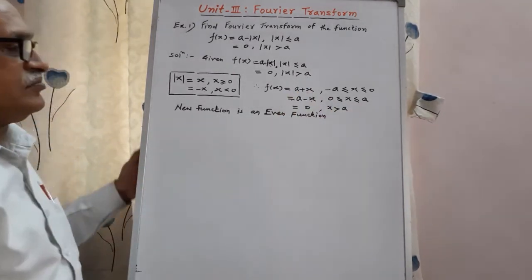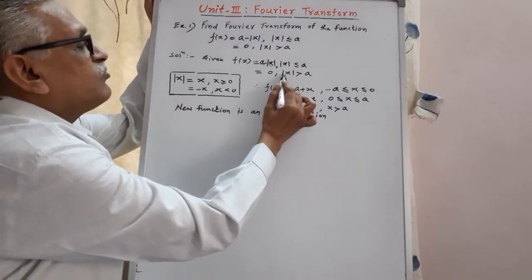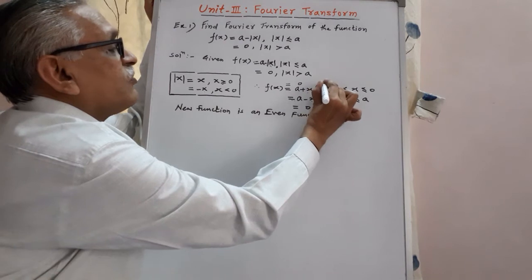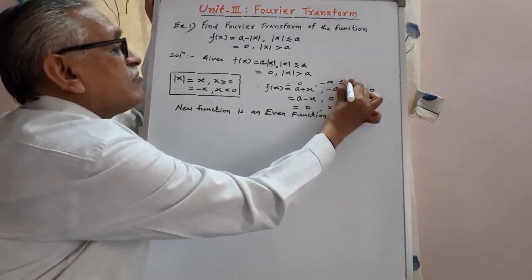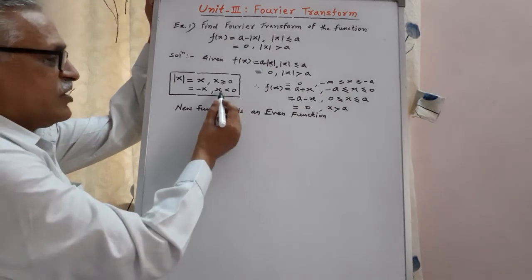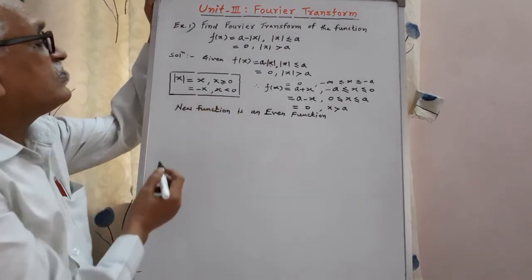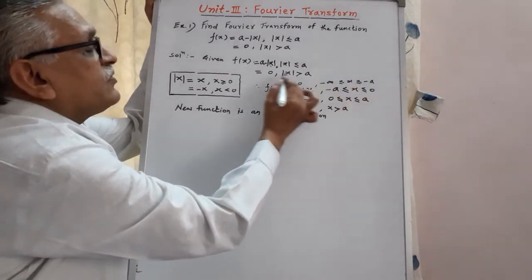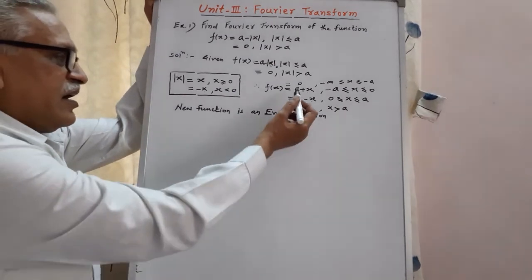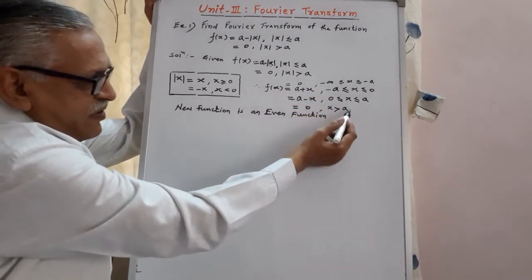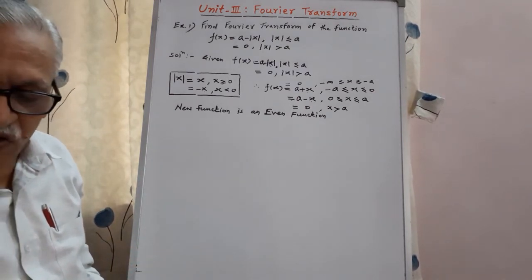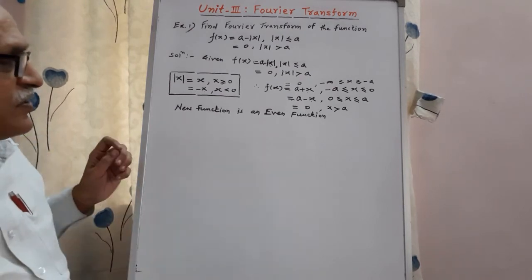For mod x greater than a, the value is 0. For the remaining values — from minus infinity to minus a its value is 0, and from a to infinity its value is also 0. As the range is from minus infinity to plus infinity, we can check whether the function is even or odd. The function is an even function.